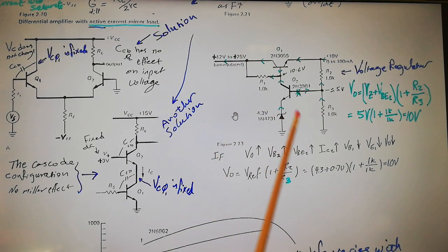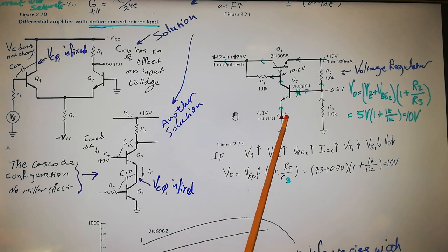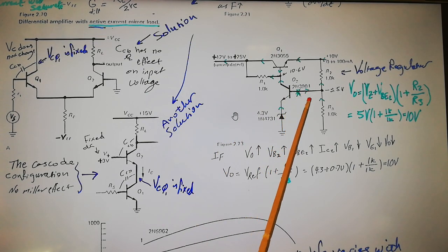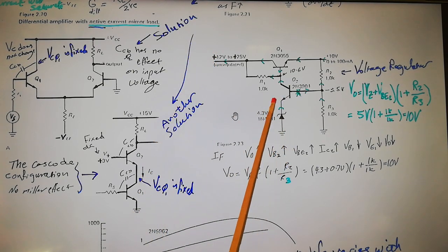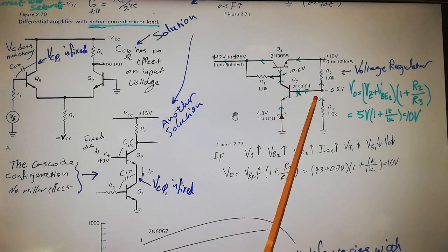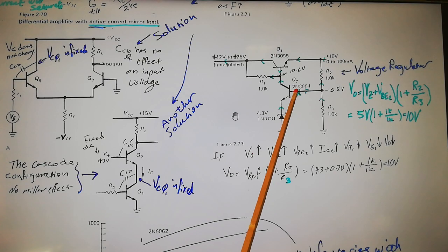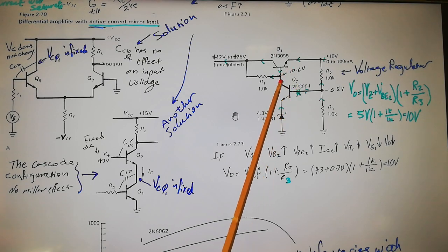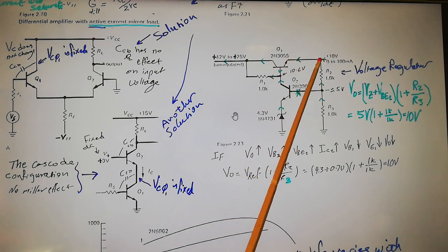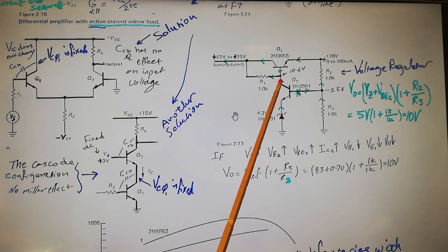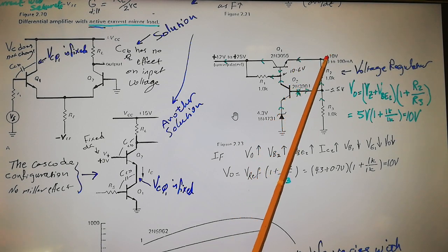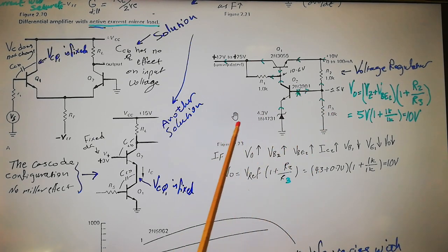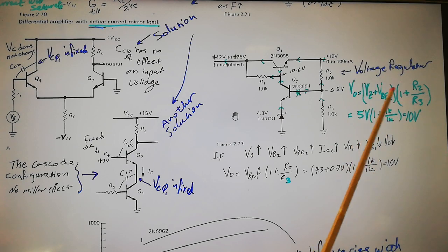Just go back to the earlier lectures if you're not familiar with this. Vbe equals (kT/q) multiplied by the natural logarithm of Ic over Is — that's the equation. 17 to 18 millivolts applied to the base will double the current. So if the output voltage increases, more current flows through Q2, which increases the voltage drop across R1, pulling the emitter of Q1 — and therefore Vout — back down to stabilize at 10 volts. That's the feedback mechanism.